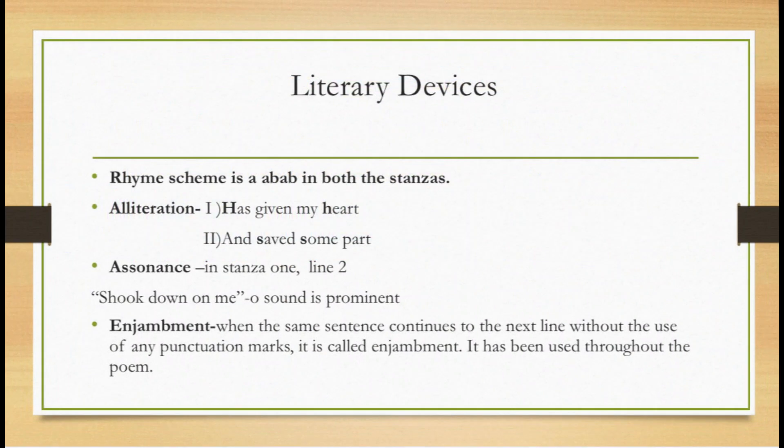Literary devices in the poem 'Dust of Snow': Number 1 — Rhyme scheme. Number 2 — Alliteration, in the lines 'Has given my heart' and 'And saved some part.' Number 3 — Assonance. What is assonance? The prominence of a vowel sound throughout a line is called assonance. In stanza 1, line 2 — 'Shook down on me' — the O sound is prominent, which shows assonance. Next is Enjambment: when the same sentence continues to the next line without the use of any punctuation marks, it is called enjambment. It has been used throughout the poem.